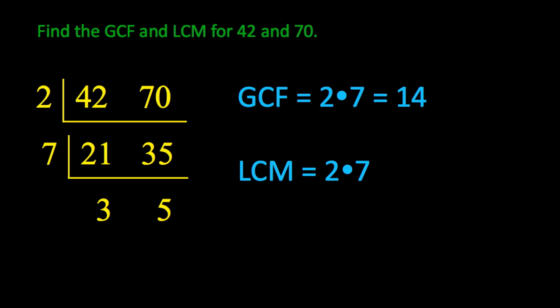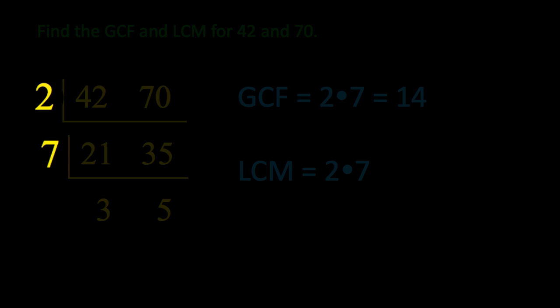All you need to do now to build your lowest common multiple is to use the 2 and the 7 from your greatest common factor and the leftover 3 and 5 from the 42 and 70.